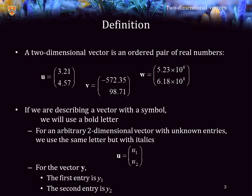For example, for the bold vector u, the first entry is the italicized u with a subscript 1. The second entry is an italicized u with a subscript 2.